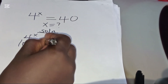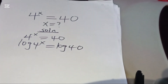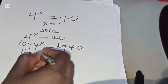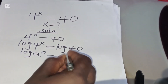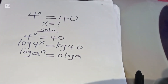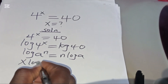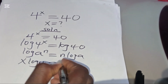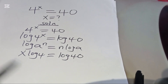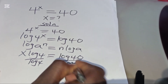Taking the log of both sides gives us log(4^x) = log(40). Now, log(4^x) is in the form log(a^n), which we can express as n·log(a). This is the power property of logarithms. Applying this property, log(4^x) becomes x·log(4), which equals log(40).